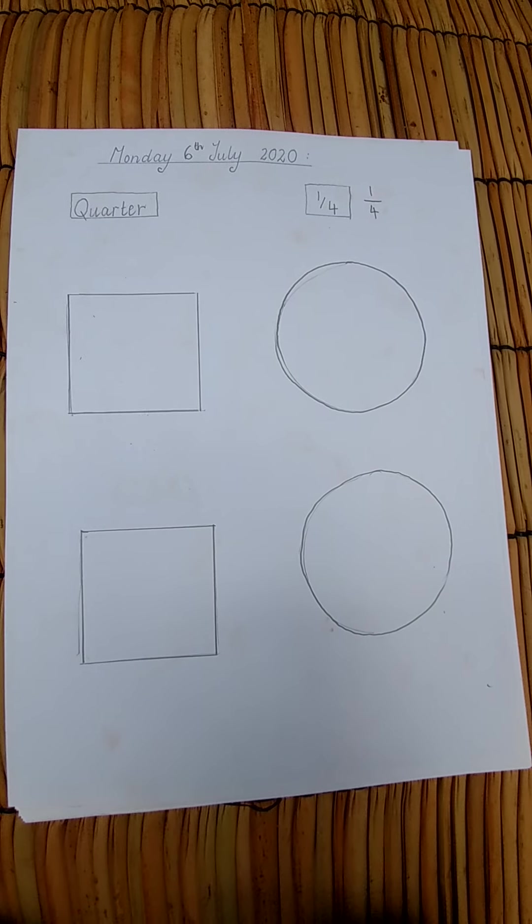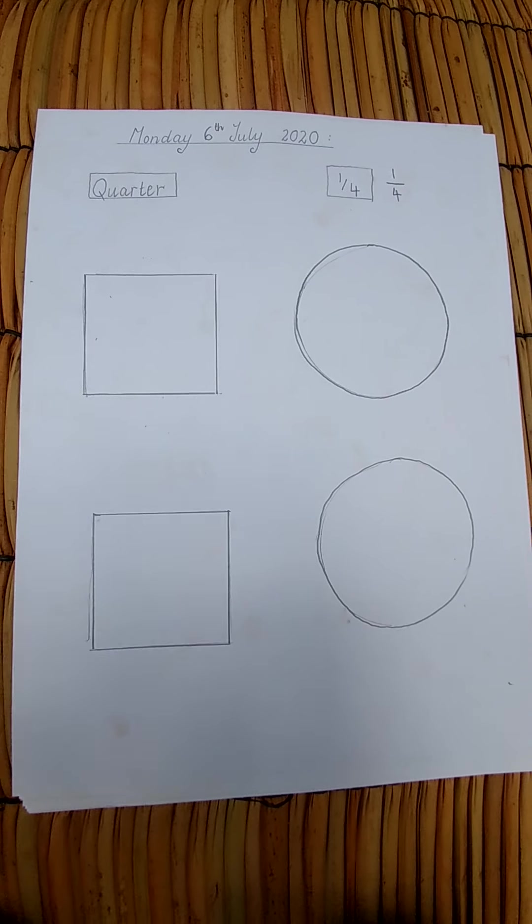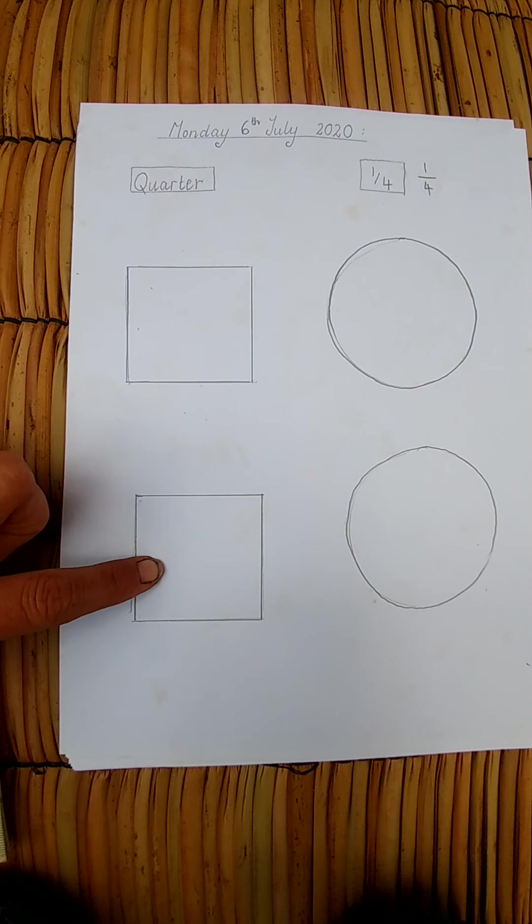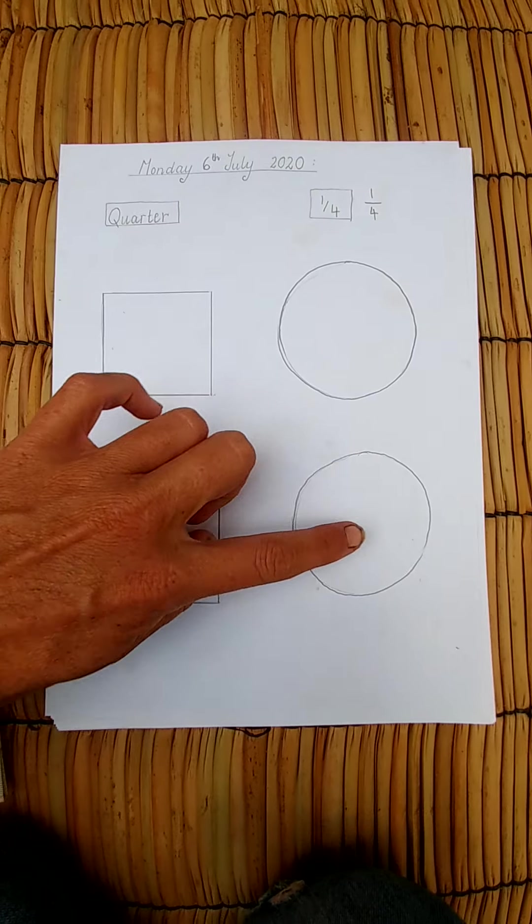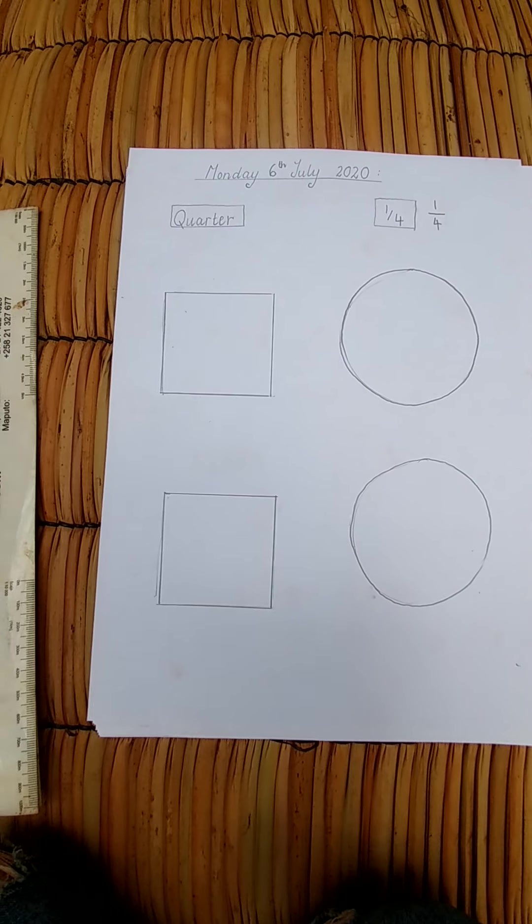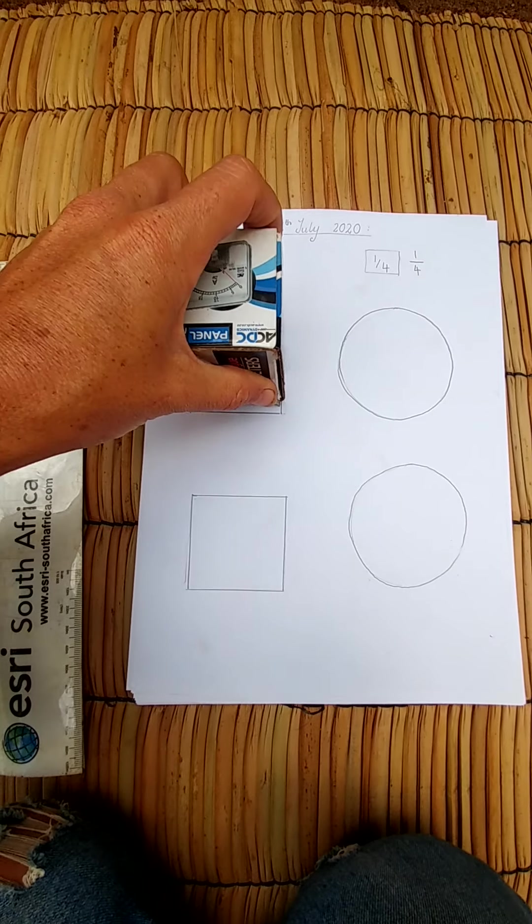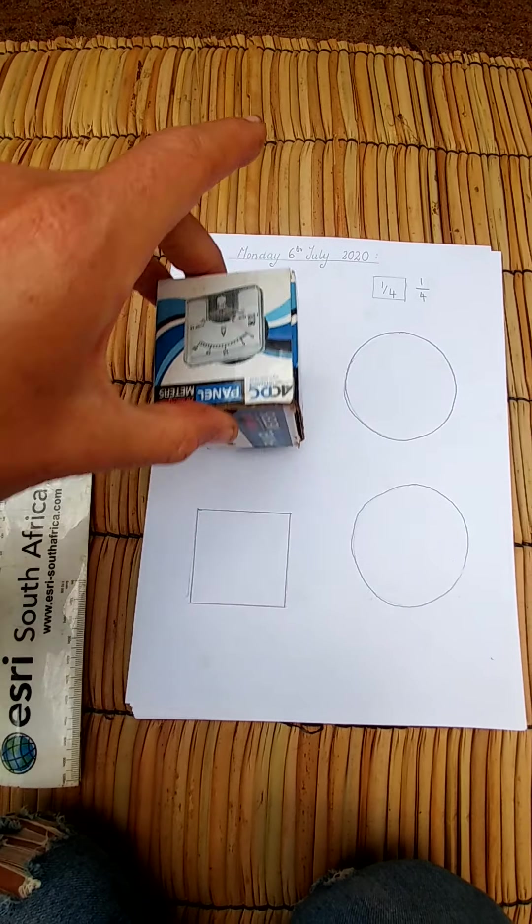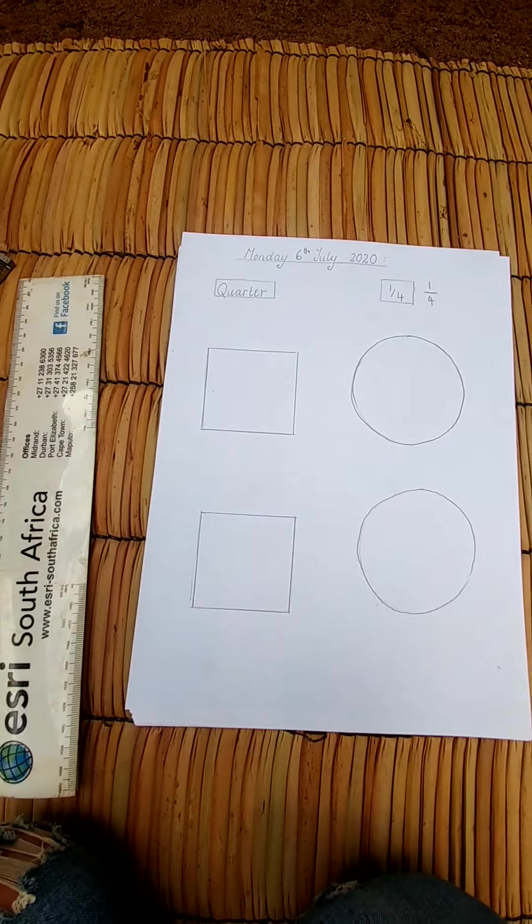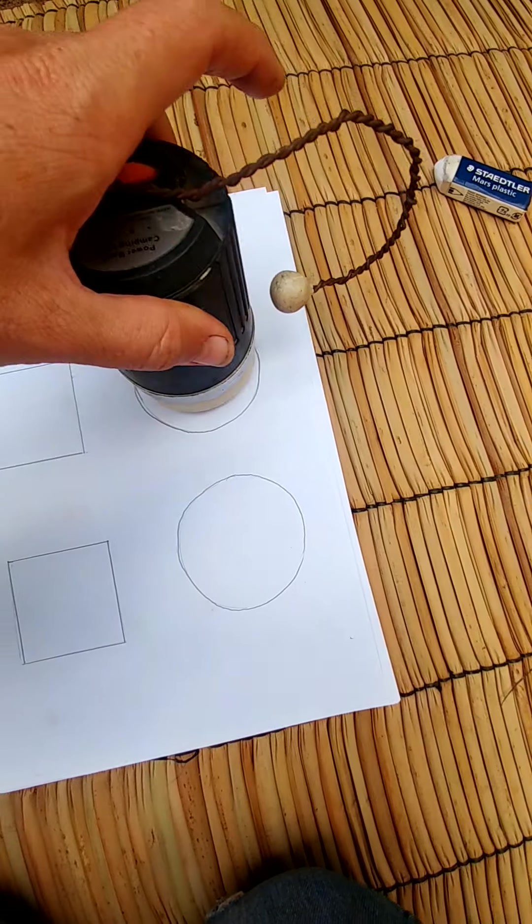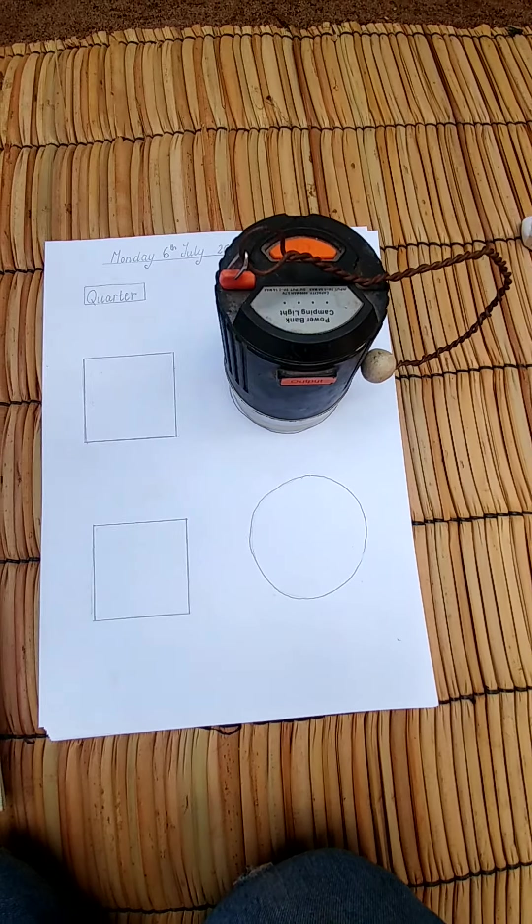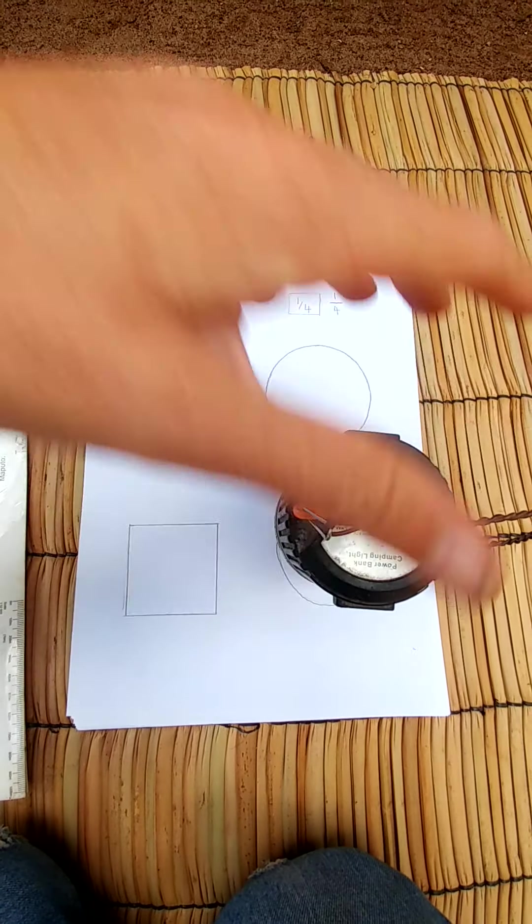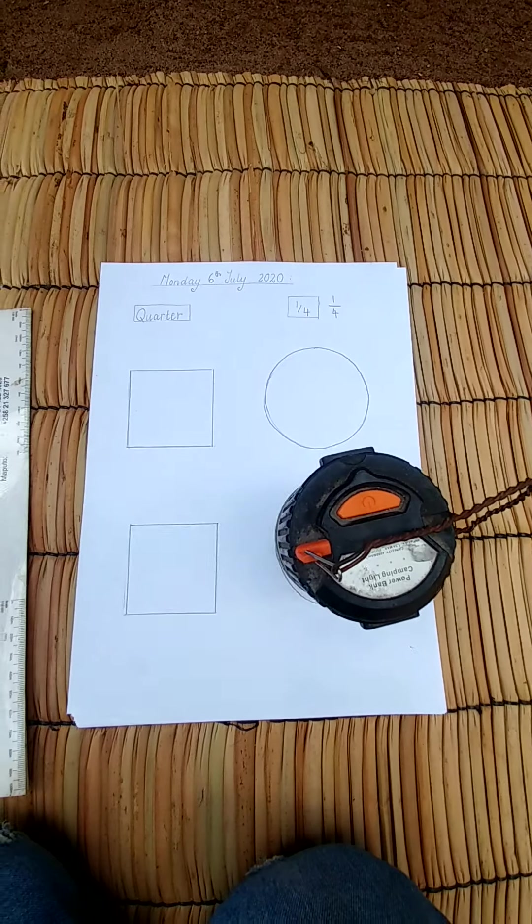Once you've found your square and circle you can use them to make two squares and two circles. Take your time to do it as neatly as possible. Put the square on the page and go around it, and then I did the same with my circle.